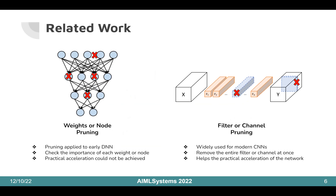There are generally two types in this field: weight pruning and filter pruning. Weight pruning or node pruning is a traditional way which was applied to early DNNs. It checks the importance of a single weight or node. Since it removes only a single node, it could not lead to practical acceleration over the standard CNN. Filter or channel pruning removes the entire filter or channel. Filter pruning techniques are more preferred nowadays because of their structural and practical advantages. In this study, we also adopted filter pruning for its benefits.